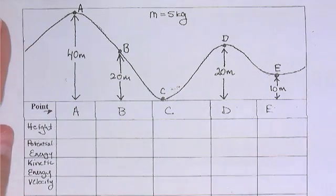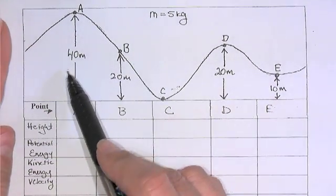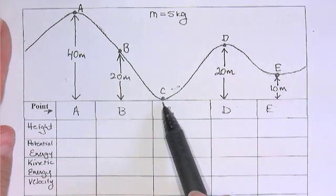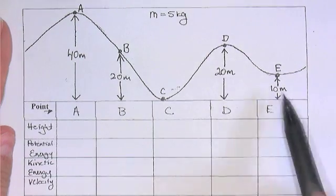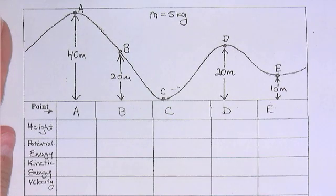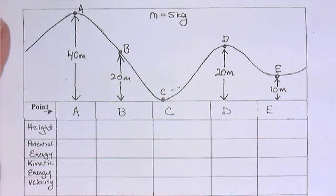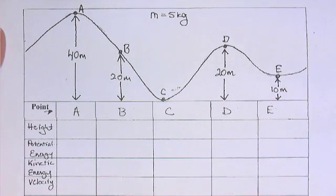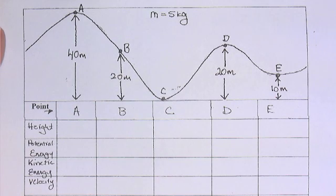And the roller coaster has a 40 meter hill, a 20 meter hill, a zero hill, a 20 meter, and a 10 meter. And the first thing that happens when you get on a roller coaster is a little conveyor belt or whatever it is puts work in and pulls you up to the top of the hill. And at the top of the hill that detaches and you sit there for a moment motionless.